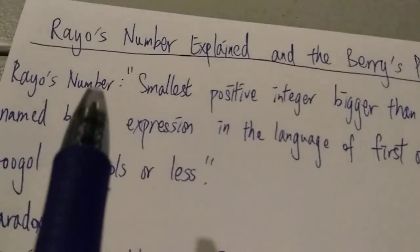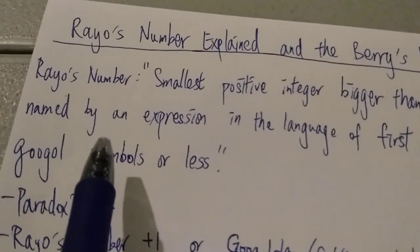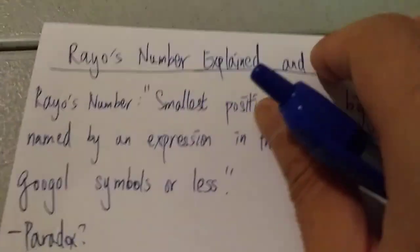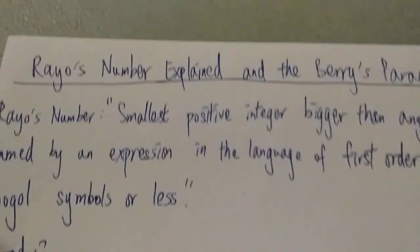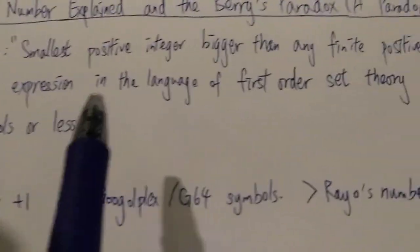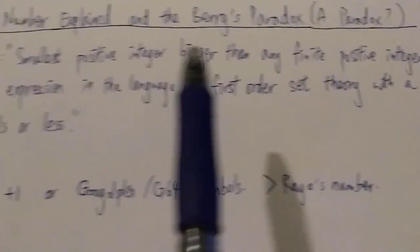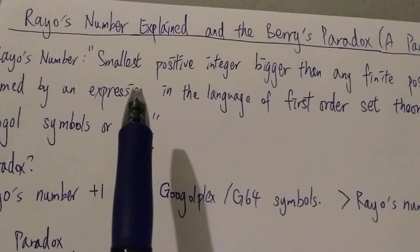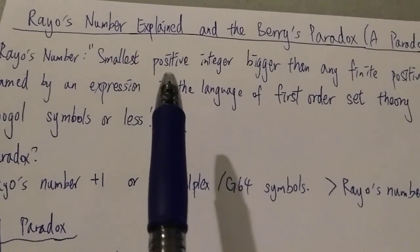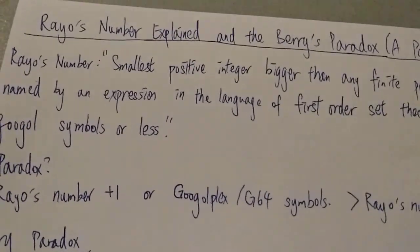Rayo's number circumvents this paradox by replacing the English language with the language of the first-order set theory. So don't forget, actually the most important thing, the key here which makes Rayo's number not a paradox is the first-order set theory.